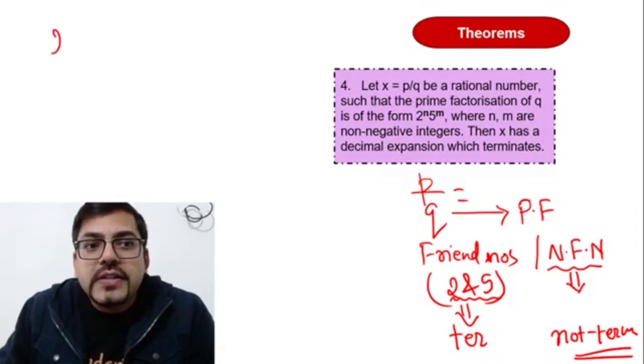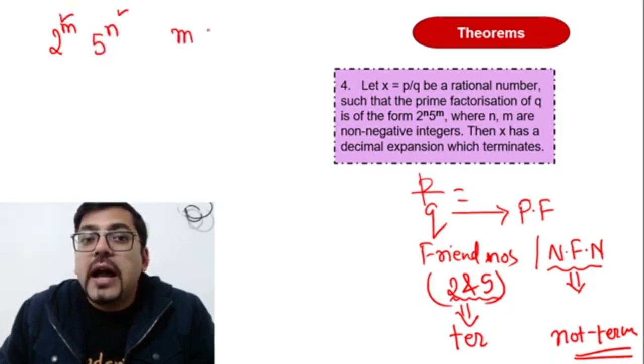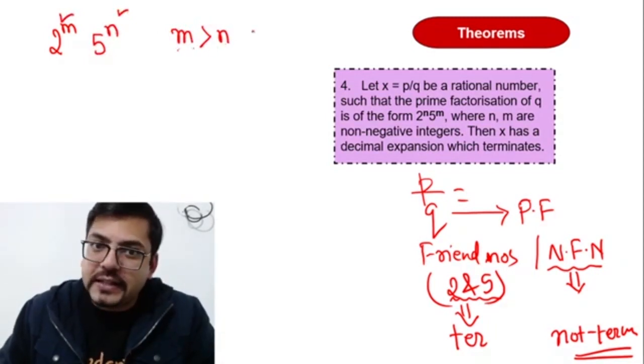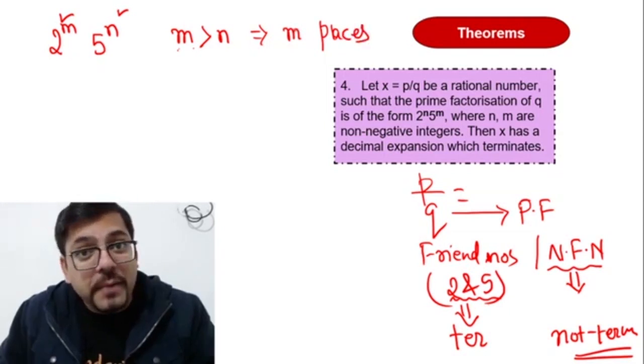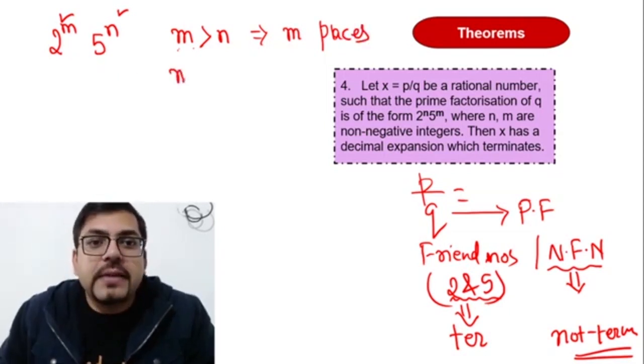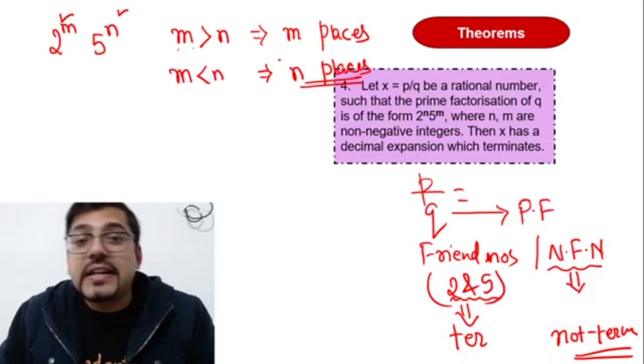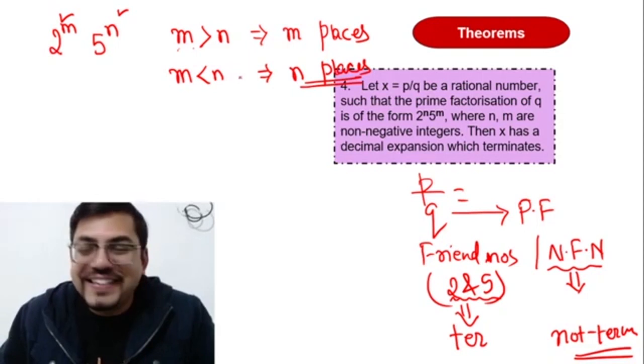So here I had taught you that always see 2 raised to power m and 5 raised to power n. So take the power of 2 and 5, compare them, and whichever is greater, that will be your answer. So if, say for example, m is greater than n, this means that decimal will terminate after m places. If m is less than n, this implies decimal will terminate after n places. So people, answer would be whichever is the higher power, that will be your answer.